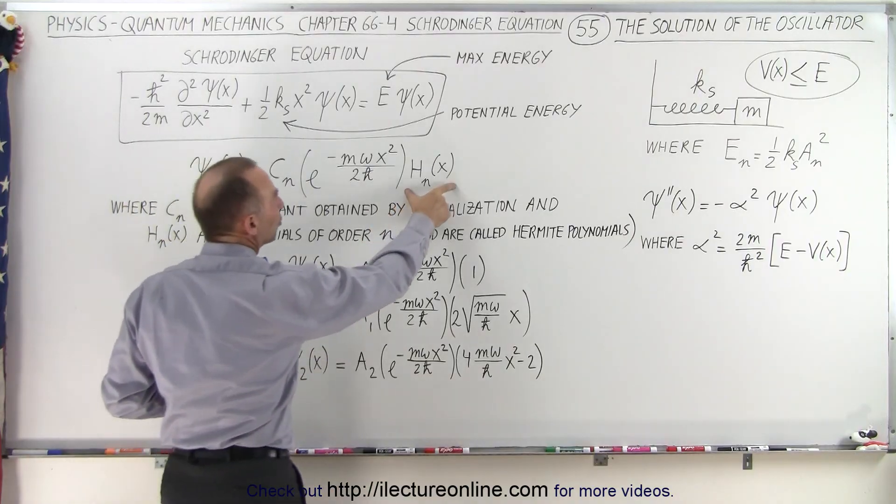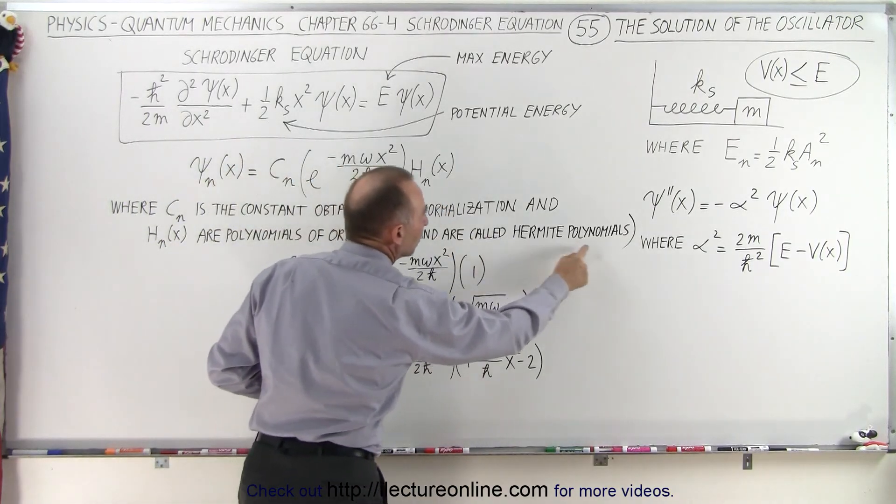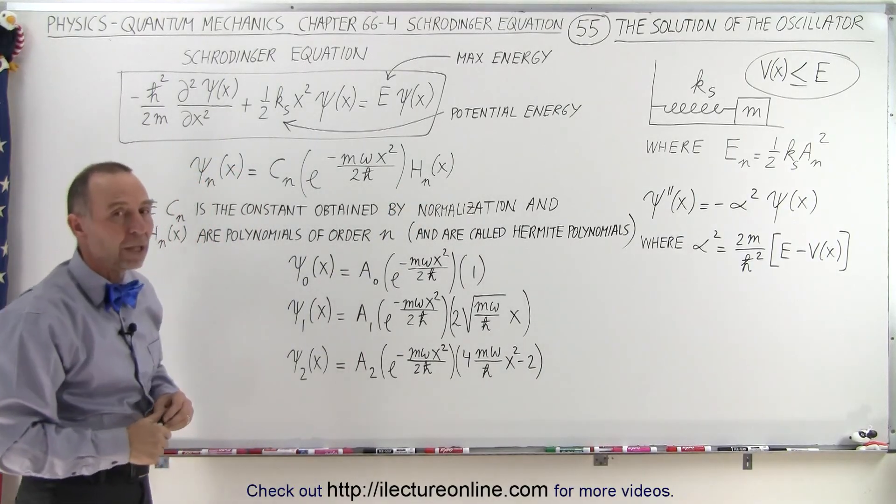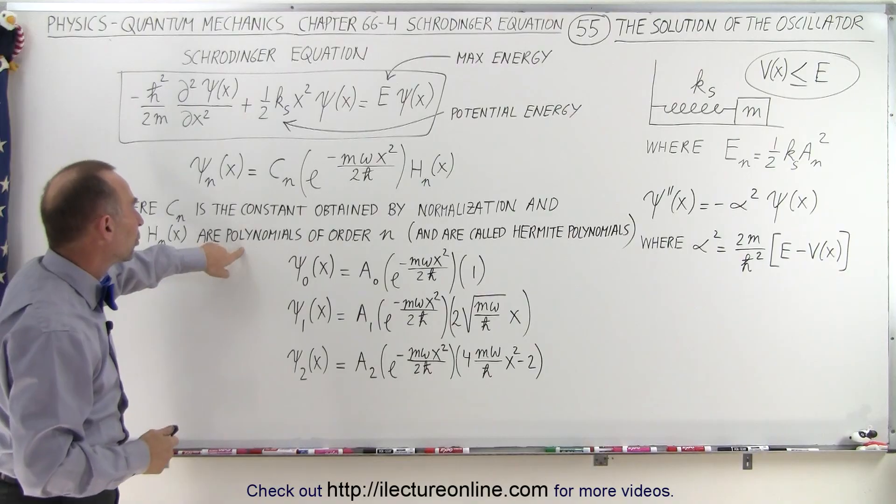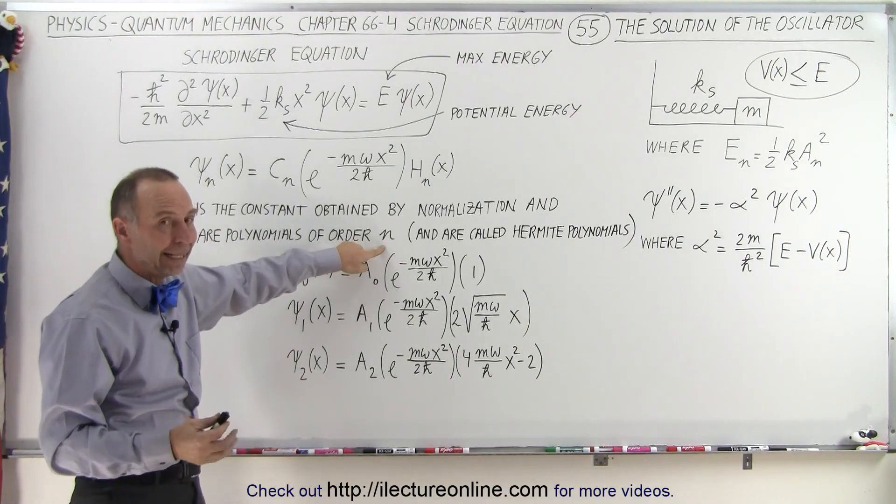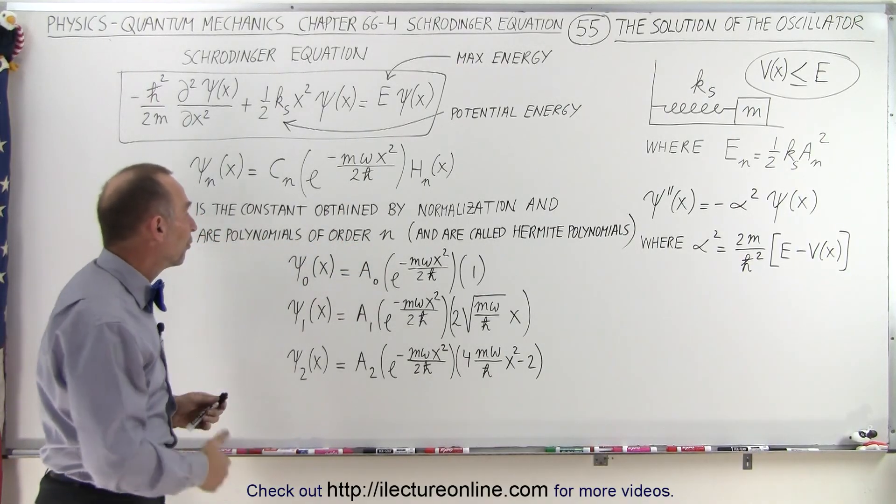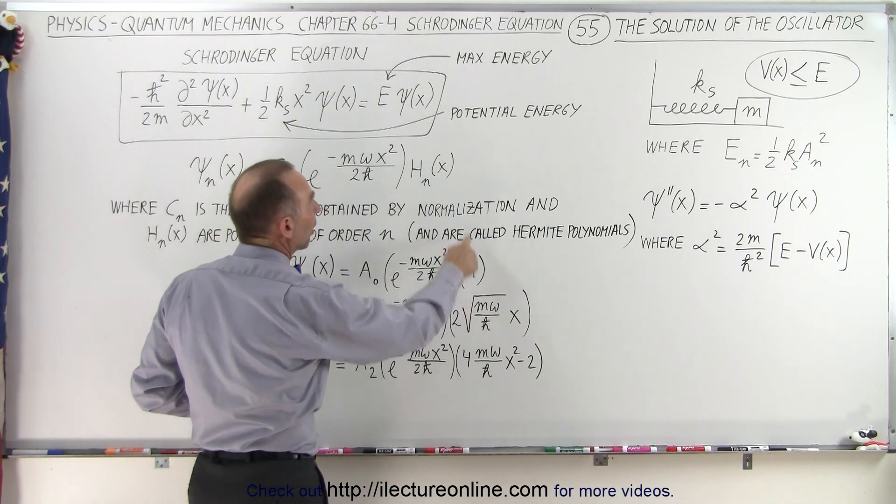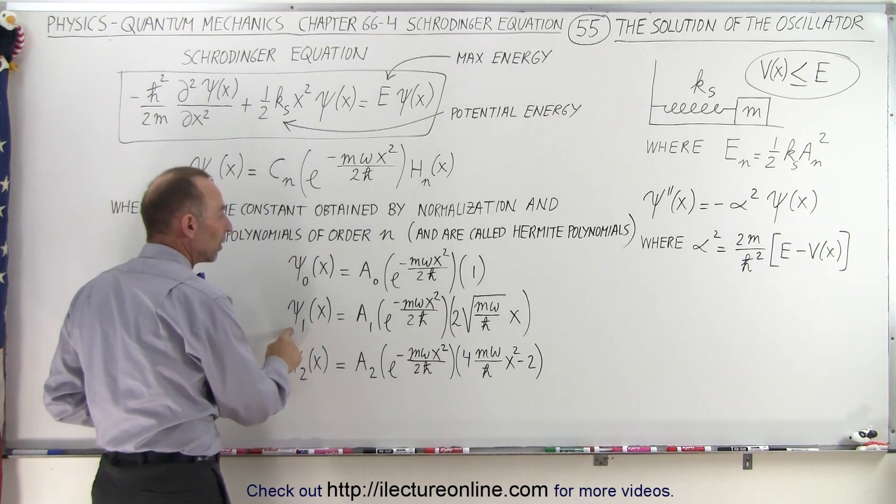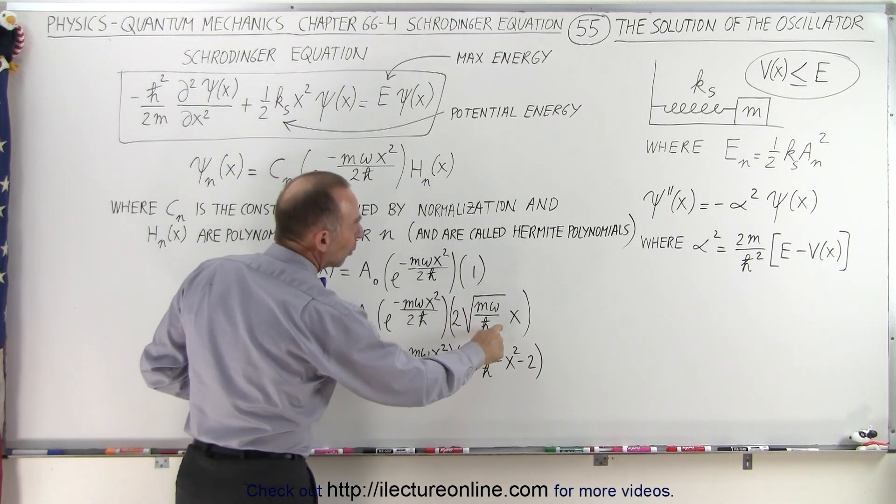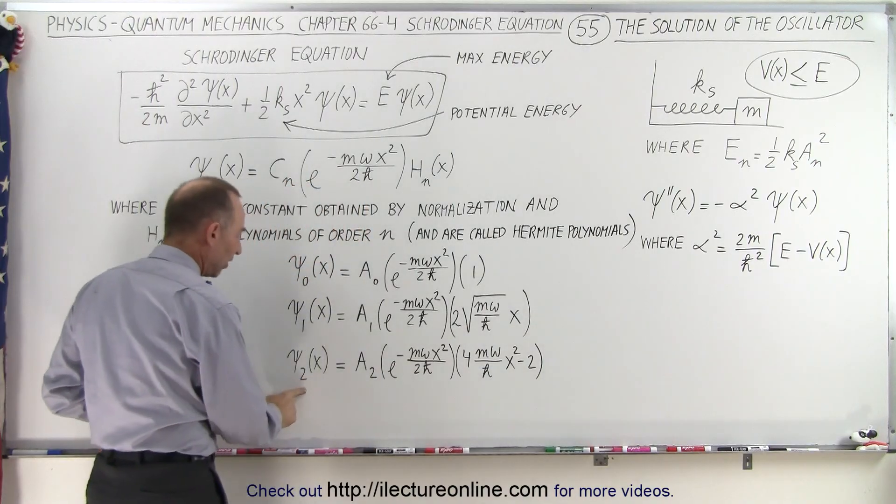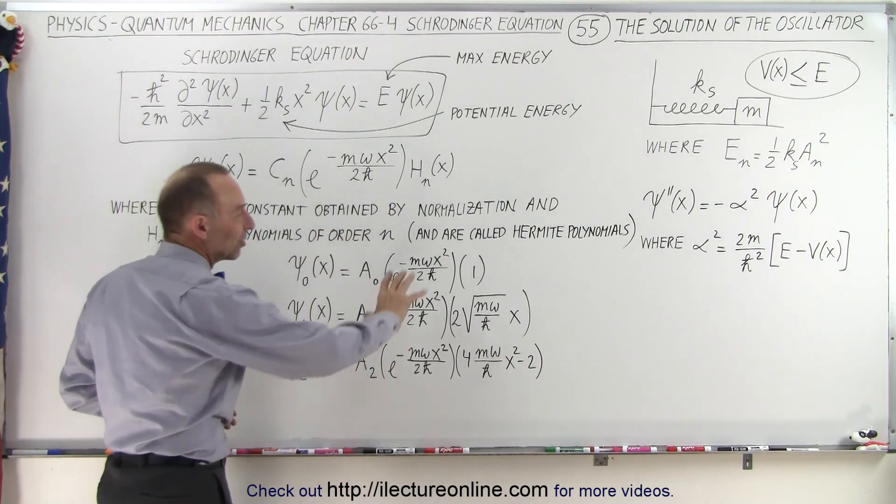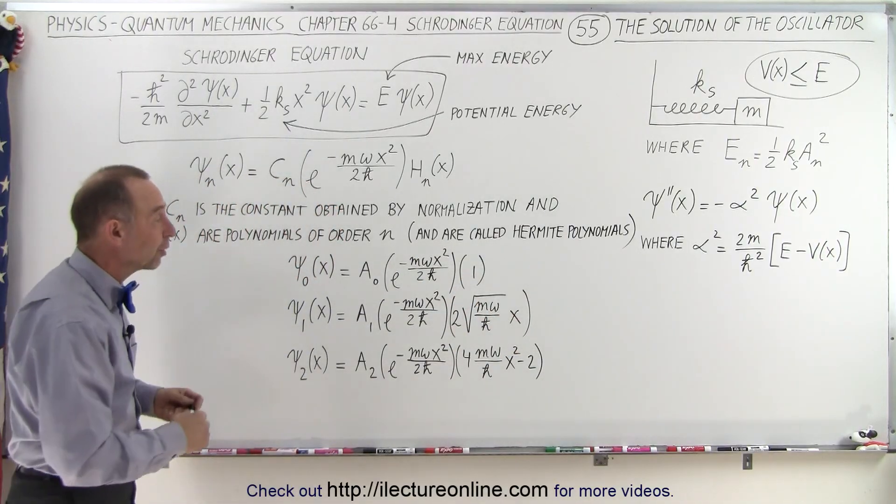The final portion is what we call a Hermite polynomial. That's what the H stands for, and it depends upon the quantum state. The Hermite polynomial is a polynomial of order n, where n depends on the quantum state. For the zero quantum state, the zero order will simply give you one. For the first quantum state above zero, we'll get a polynomial of order one. For the second quantum state, we'll get a polynomial of order two. What exactly these polynomials look like, we'll show you in a future video.